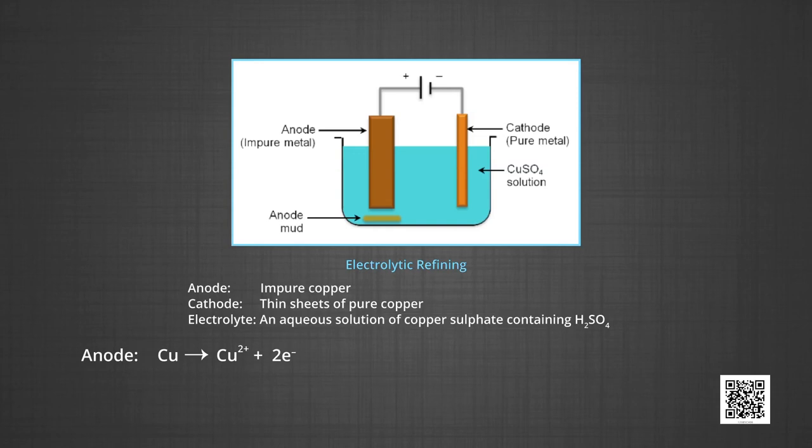The reaction, at anode, copper gets oxidized to copper ions plus two electrons. And at cathode, copper ions pick these two electrons to form pure copper metal. On passing electric current, pure copper metal from the electrolyte solution deposits on the cathode. At the same time, an equal amount of impure copper dissolves from anode into the electrolyte solution. The metallic impurities present in the blister copper drop down and deposit as anode mud.